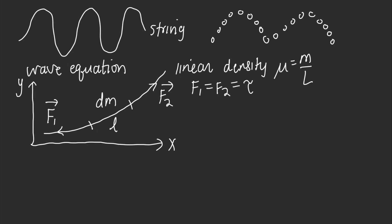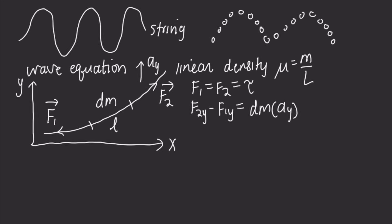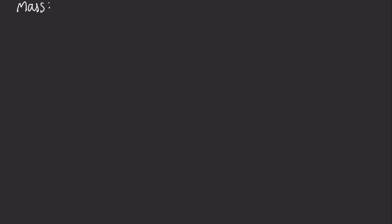Because the string is slightly curved, the two forces don't simply cancel each other out. Instead they combine to produce a net force pointing upward, giving the element an upward acceleration ay. Applying Newton's second law: F2y minus F1y equals dm times the acceleration in the y direction.